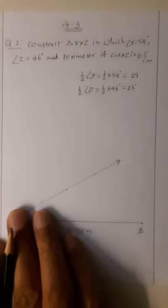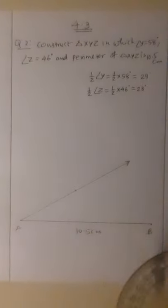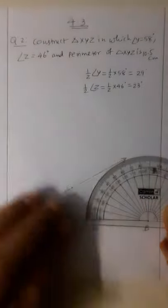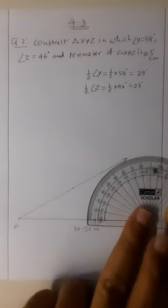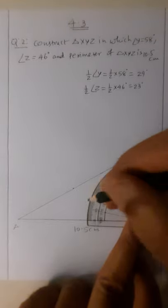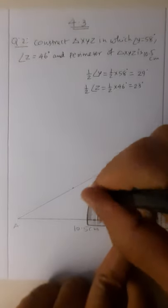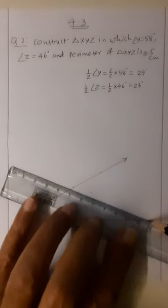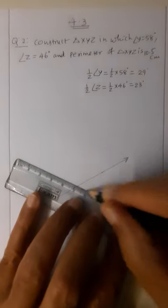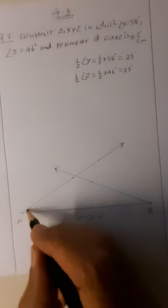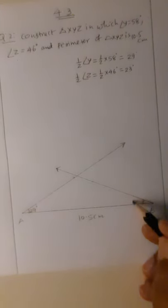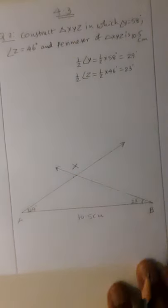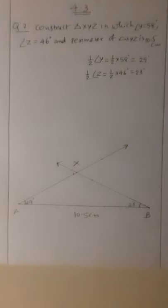From point B I draw a 23-degree angle. I place the protractor carefully at B: 0, 10, 20, and then 1, 2, 3 — marking 23 degrees. I connect the dot to point B to get the 23-degree ray. Both the 29-degree and 23-degree rays meet at a point, which is point X of triangle XYZ.